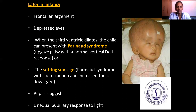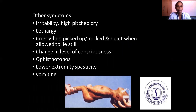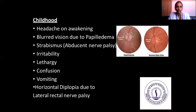Parinaud syndrome with lid retraction and increasing tonic downgaze. Unequal pupillary response to light. Other symptoms include irritability, high-pitched cry, and lethargy. The child will cry when picked up or rocked and stop when allowed to lie still. Change in level of consciousness, opisthotonus, upper extremity spasticity, and vomiting. In older children: blurred vision due to papilledema, strabismus, irritability with periods of lethargy, confusion, vomiting, horizontal diplopia due to lateral rectus nerve palsy.